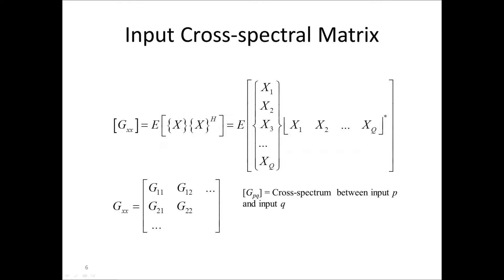Using the input and output vectors x and y, we can define the input cross-spectral matrix Gxx as the expected value of x times the Hermitian transpose of x. The Hermitian transpose of x means the complex conjugate of the column vector x transposed. Thus, after the expected value operation, or averaging several blocks of spectra, we obtain Gxx as G sub 1,1, G sub 1,2, etc., as shown here.